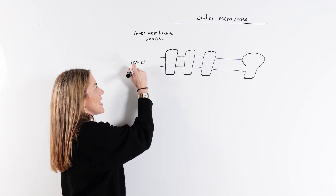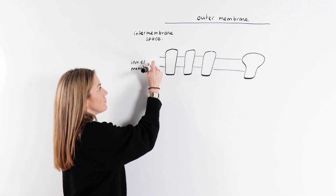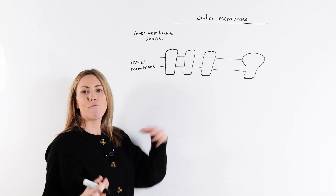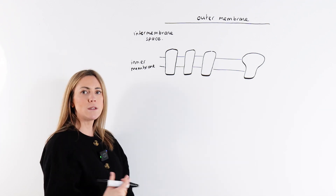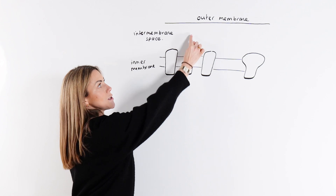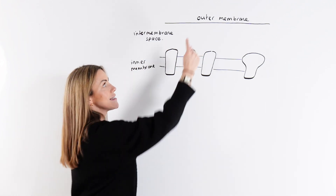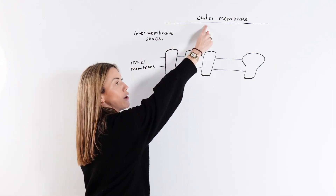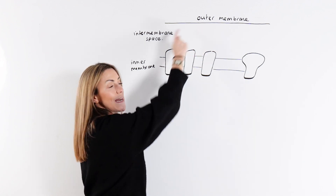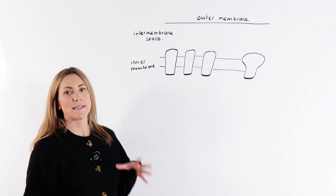This is the inner membrane of the mitochondria — the membrane that is folded into those cristae. We've got a space here called the intermembrane space, and then we've got the outer membrane. So this is the folded inner membrane, and this is the outer membrane of the mitochondria.